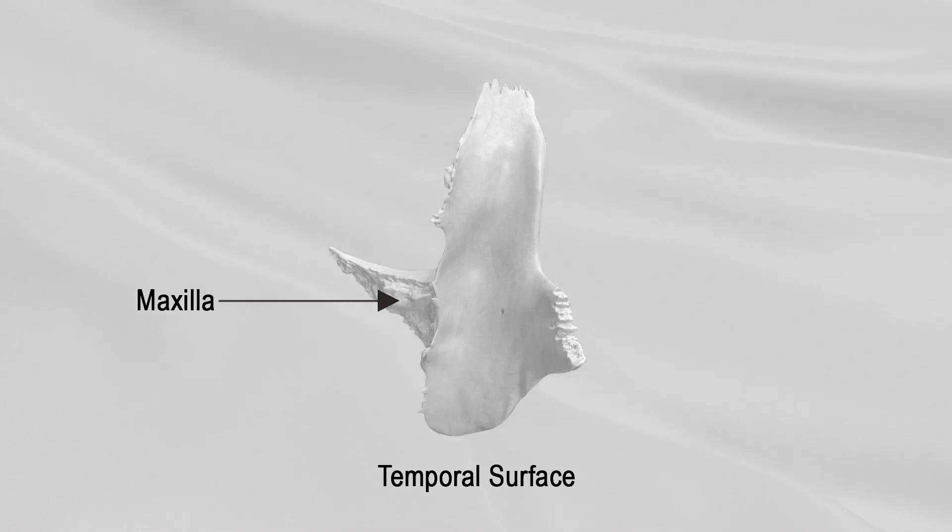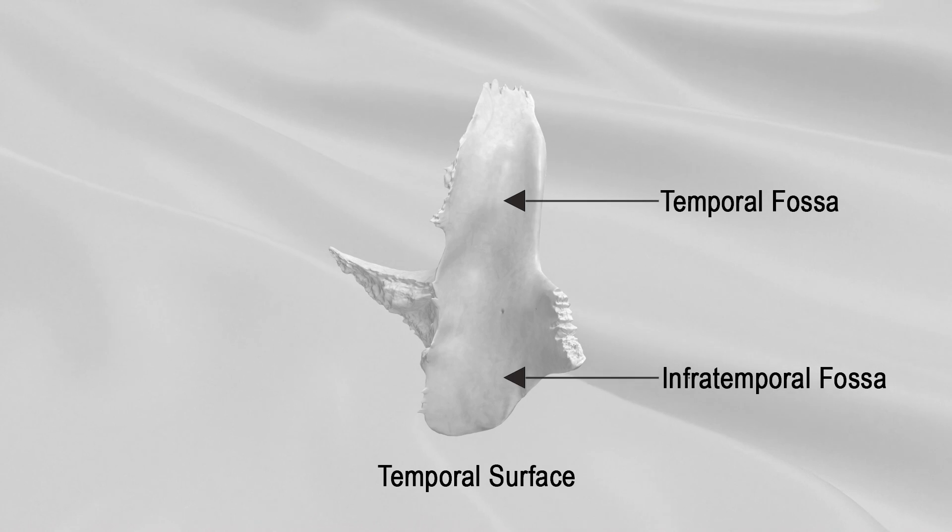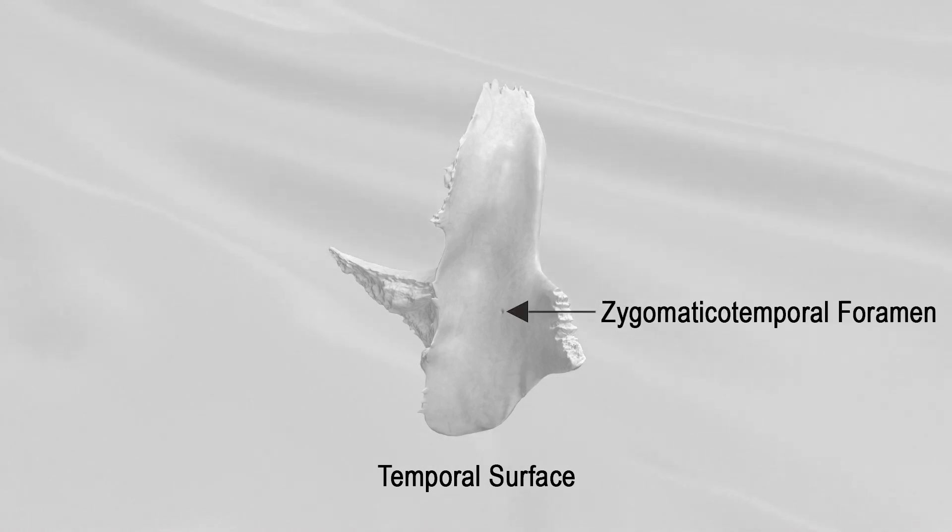Laterally, it presents a smooth, concave surface, the upper part of which forms the anterior boundary of the temporal fossa and the lower part of the infratemporal fossa. Near the center of this surface is the zygomaticotemporal foramen for transmission of the zygomaticotemporal nerve.